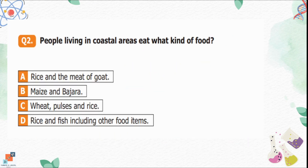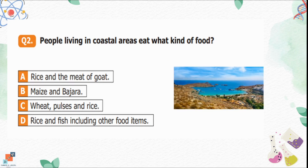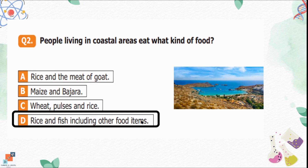Question number 2: What kind of food do people living in coastal areas eat? Option A is rice and the meat of goat. Option B is maize and bajra. Option C is wheat, pulses and rice. Option D is rice and fish including other food items. Option D is the correct option because fish is easily available in rivers, and rice is a grain that usually grows in watery areas.